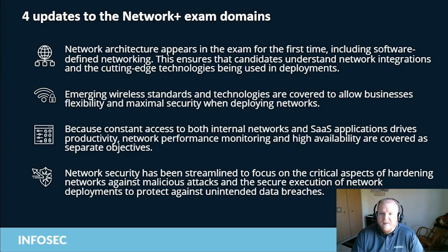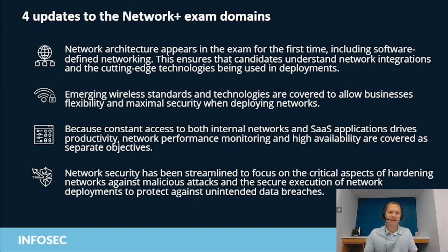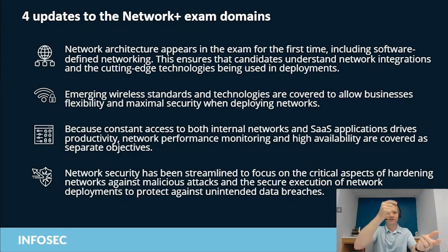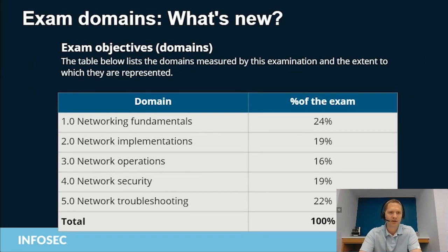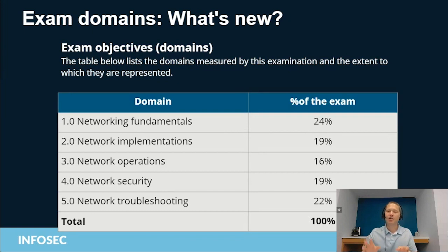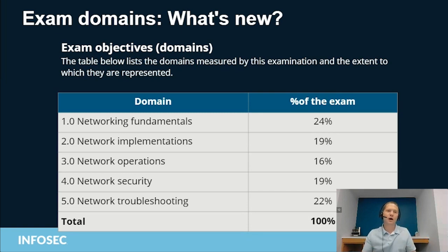I'm going to have to disagree on this one. I actually did the math — I literally took both sets of objectives, put one on each screen, and counted objectives, domains, sub-objectives, and sub-bullets. This took me a solid couple of hours. There are five domains on each exam. On the N10-007 certification there are 29 objectives; there are only 25 on the N10-008. We've streamlined it, and the sub-bullets have gone from 235 down to 157.